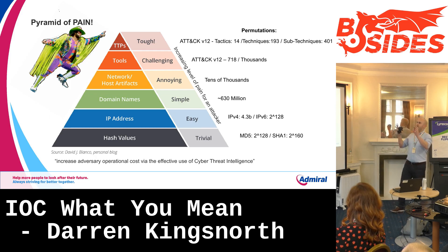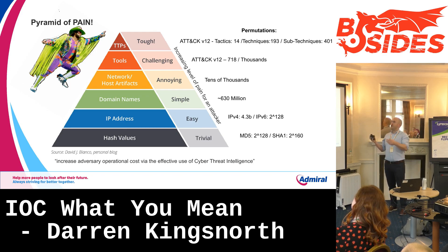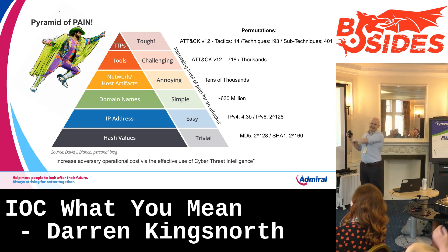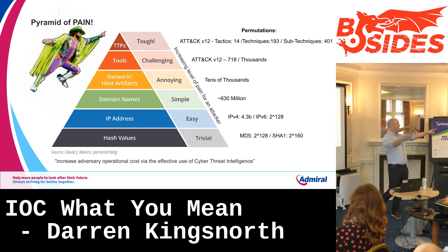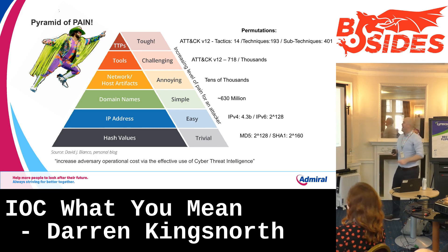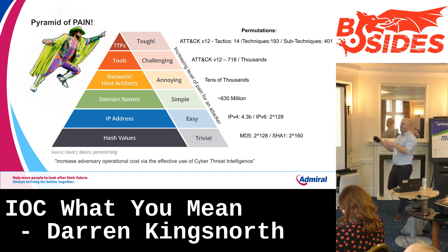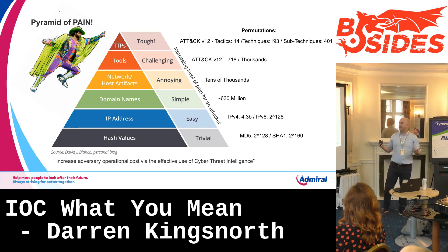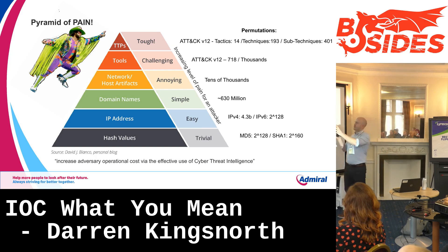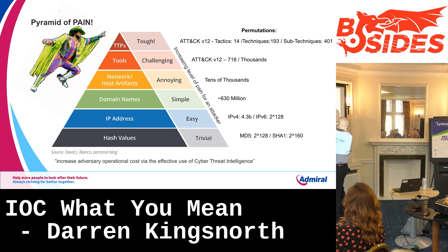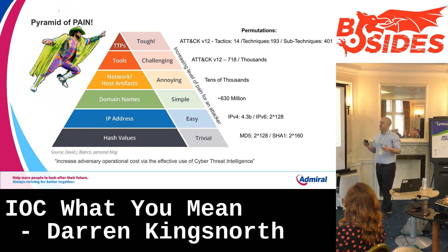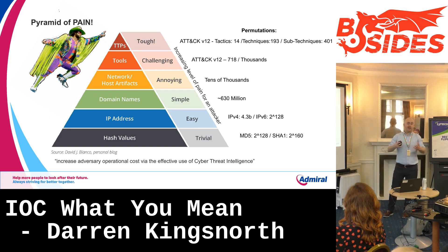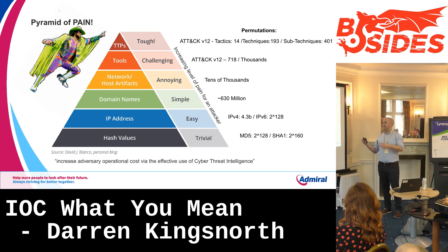How do we do that? From a cyber perspective you may be aware of the pyramid of pain. The pyramid of pain is all about increasing adversarial operational cost — making it harder for the attacker. Sometimes this gets confused: trivial, easy, simple refers to how easy those things are for the attacker to change. It's all about increasing the level of pain for the attacker, making it harder for them to move. Swimming in treacle is far better for us as defenders.